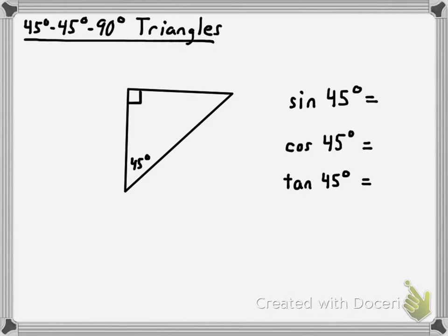Let's talk about 45-45-90 degree triangles. You know that if you know two angle measures in a triangle you can find their sum and subtract from 180 to find the third angle. So if one angle is 45, another is 45, they add up to 90, and together with the right angle they sum to 180 degrees. Also, anytime a triangle has two congruent angles, the sides across from those angles will be congruent — so a 45-45-90 triangle is an isosceles right triangle.